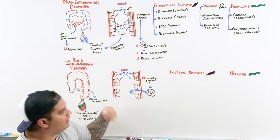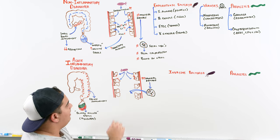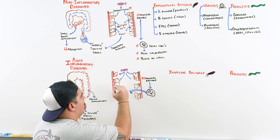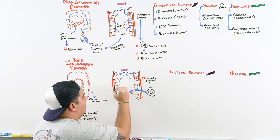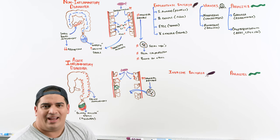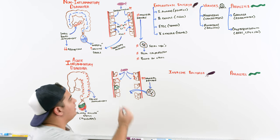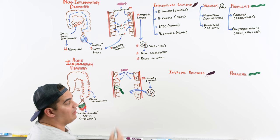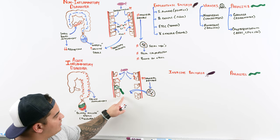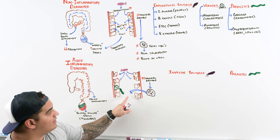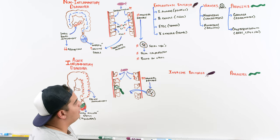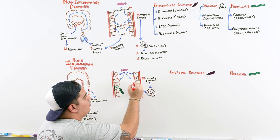With more inflammation, goblet cells — which are naturally present and hate inflammation — start secreting large amounts of mucus into the lumen in response. You're also damaging the barrier, allowing blood to start leaking out.